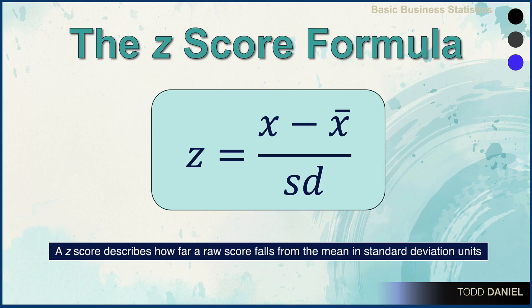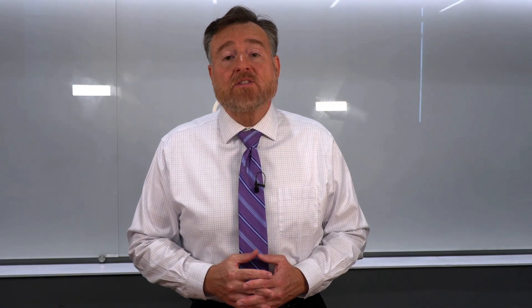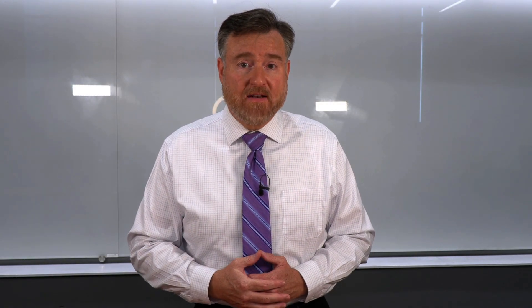A z-score tells us how far a raw score falls from the mean in standard deviation units. This is the z-score formula: z equals x — which is our raw score — minus the mean of all the scores for that variable, divided by the standard deviation of that variable. Now that we know what a z-score is, let's look at how it can be used and interpreted.